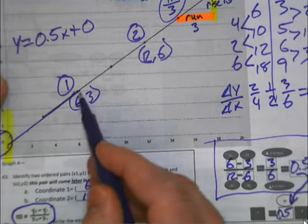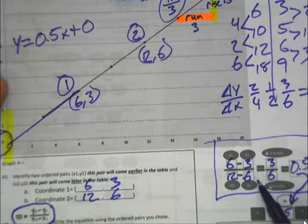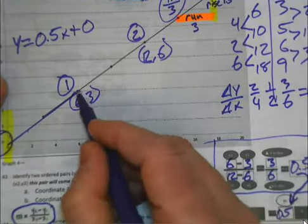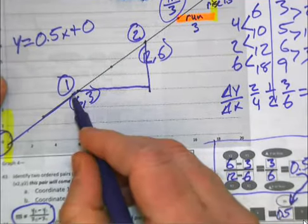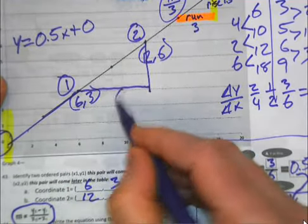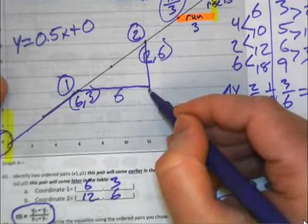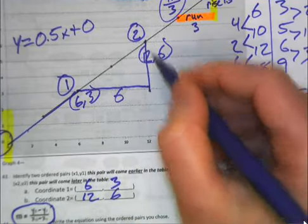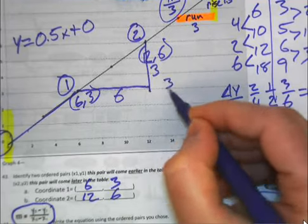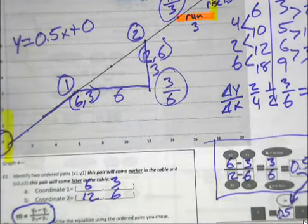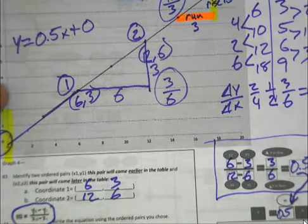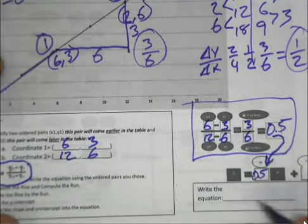So it's just like doing a slope triangle. Only you're doing it mathematically. Instead of drawing out the slope triangle like so and finding that your X changed from 6 to 12, that's 6, and from 3 to 6, that's 3, and writing your rise over run as 3 over 6, you're just doing the math. You're saving yourself the time. You don't have to draw it. So let's write the equation.